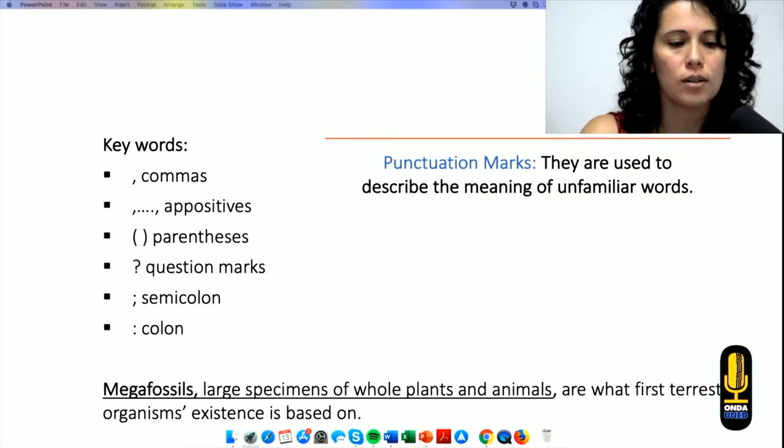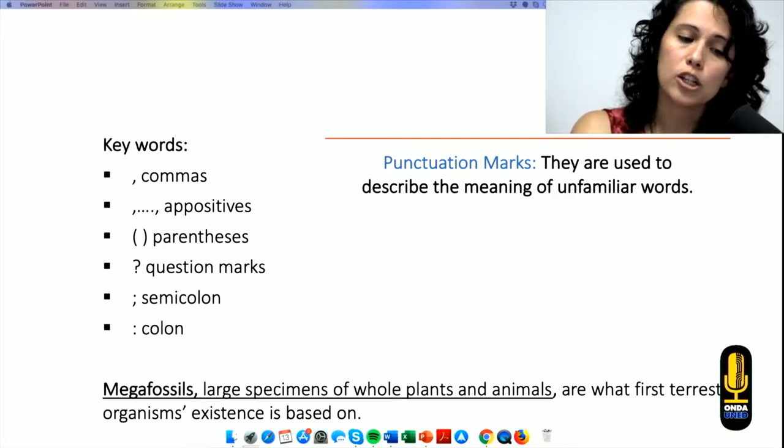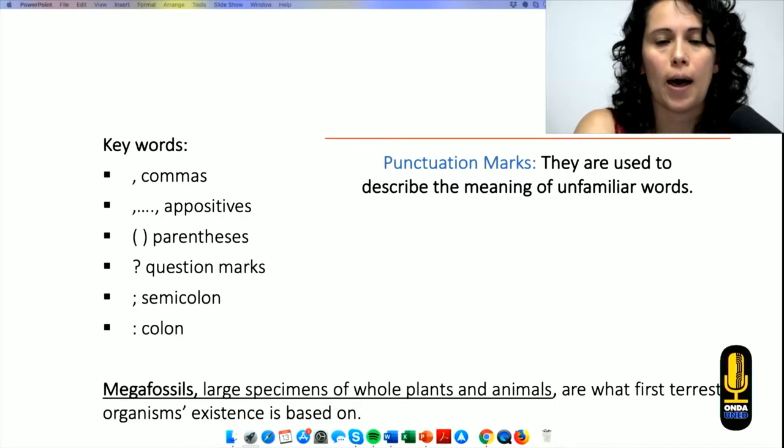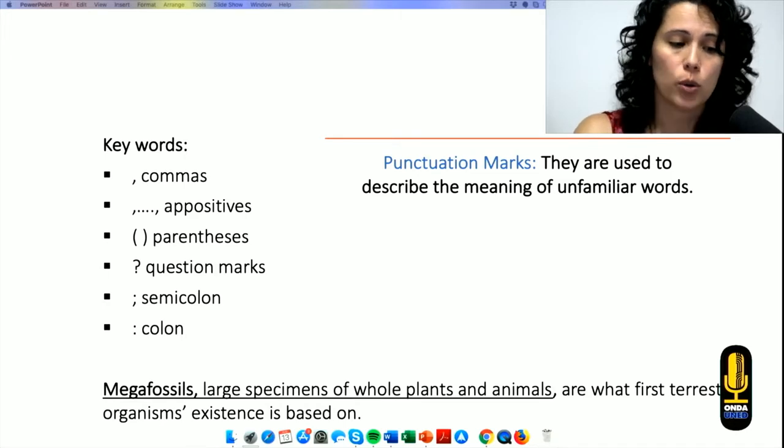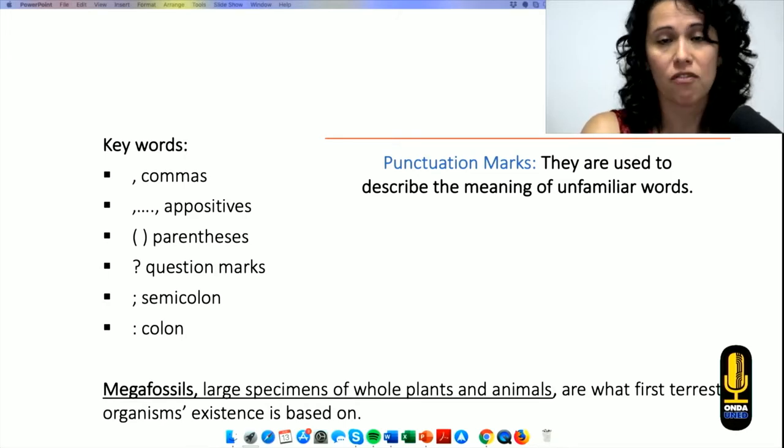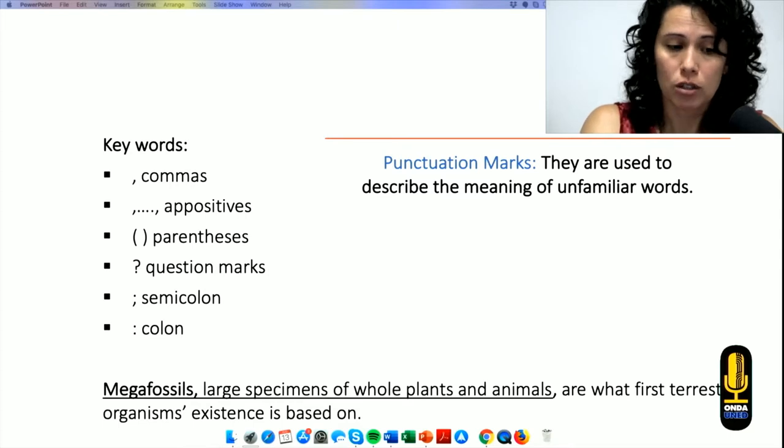Let's move on to another one, which is punctuation marks. Writers use punctuation marks to describe the meaning of unfamiliar words. If you see the example, megafossils, we might not know what it is. But in between commas, there is a definition: large specimens of whole plants and animals. And so now I know what it is. Punctuation marks is also used for that.